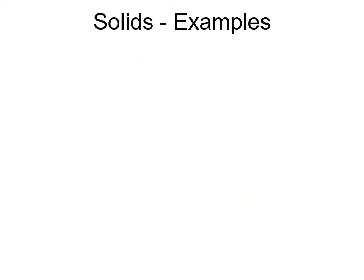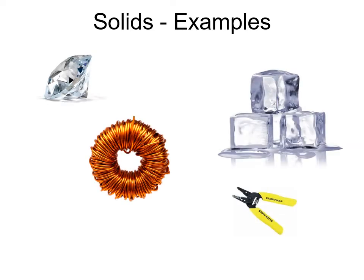A few examples of solids come in different forms. They can be pure elements containing only one type of atom, such as copper. They may be a simple molecule or compound such as water, where there are two hydrogens for every one oxygen. It may be a specialized crystalline structure of one element, such as diamond, which is made of carbon. Or it may be an extremely complex compound made up of many different types of molecules, such as a pair of wire strippers, as seen in the lower right-hand side. These are all examples of different types of solids.